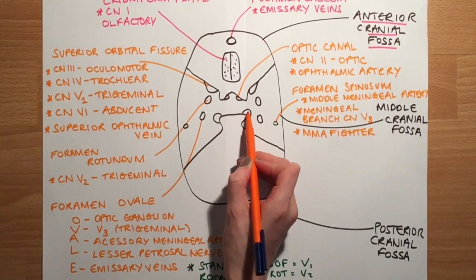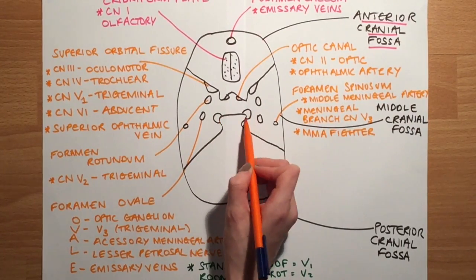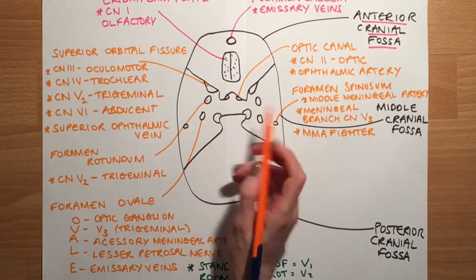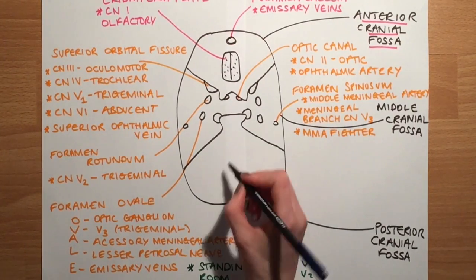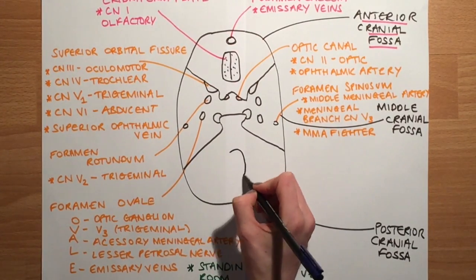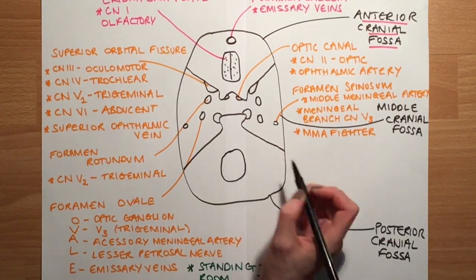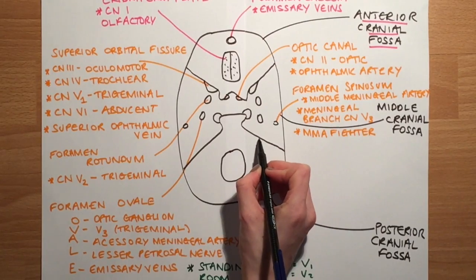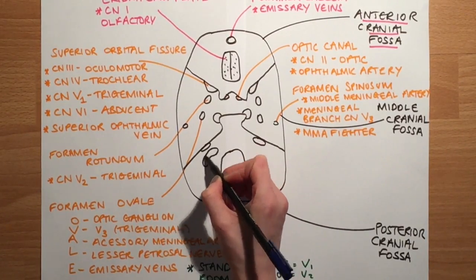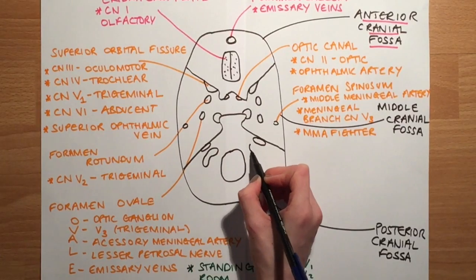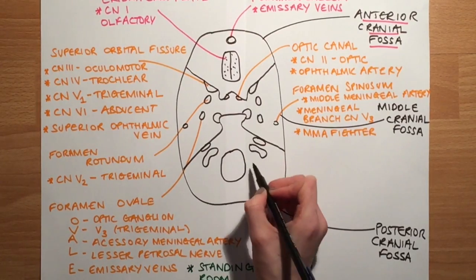The foramen lacerum will not be focused on today as it will be covered in another video. Moving to the posterior cranial fossa, we are going to draw the foramen magnum, the internal acoustic meatus, the jugular foramen, and the hypoglossal canal.